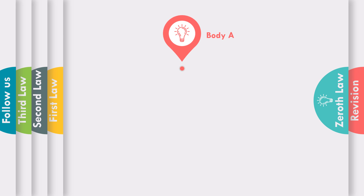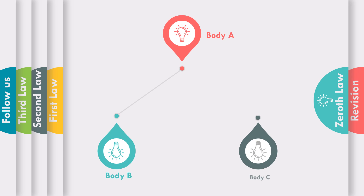What is the statement of the Zeroth Law of thermodynamics? Let us consider three bodies: body A, body B, and body C. If body A is in thermal equilibrium with body B individually, as well as body A is in thermal equilibrium with body C individually, then according to the Zeroth Law, body B and body C are also in thermodynamic equilibrium with each other.